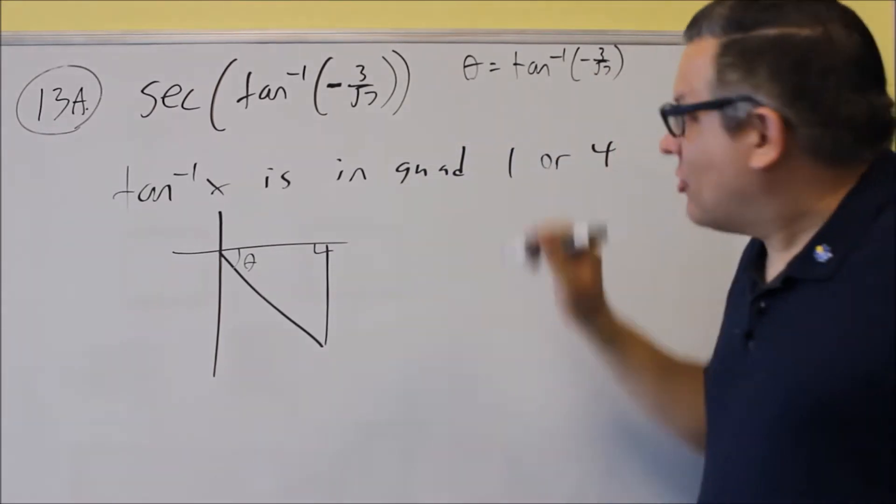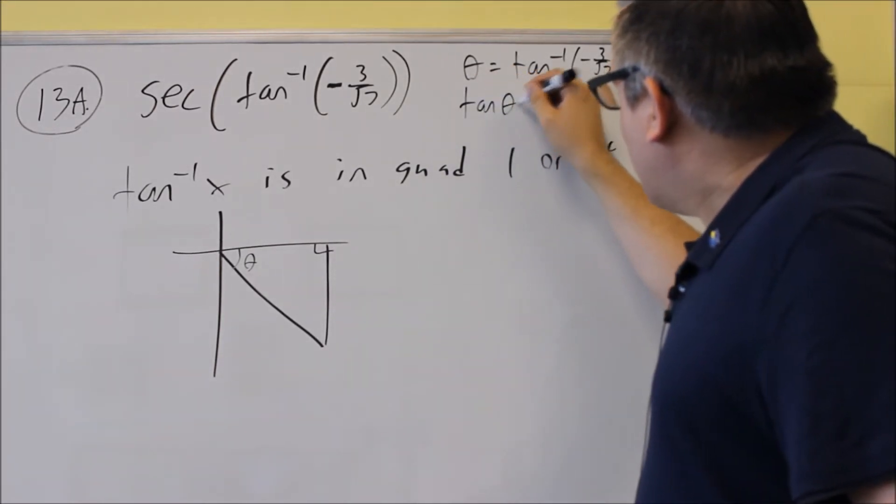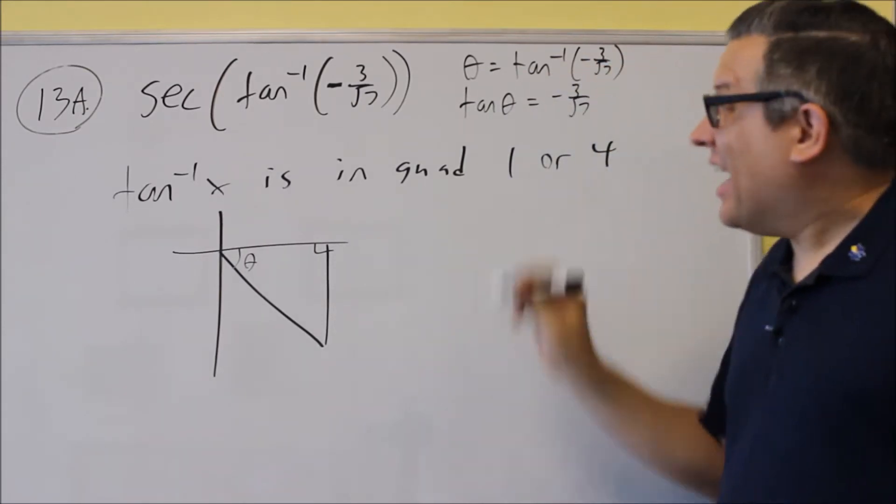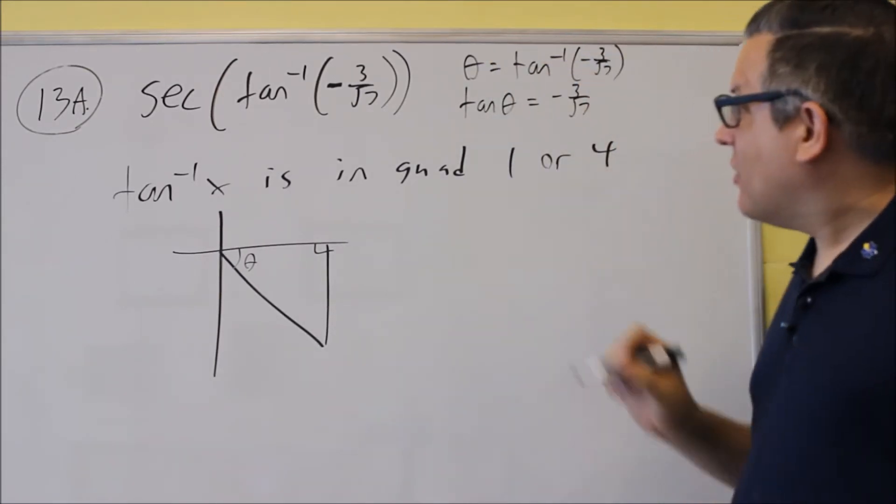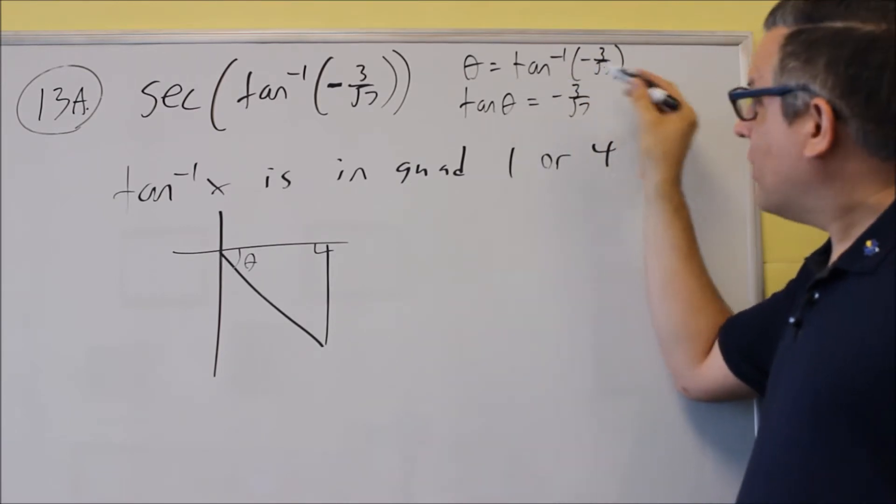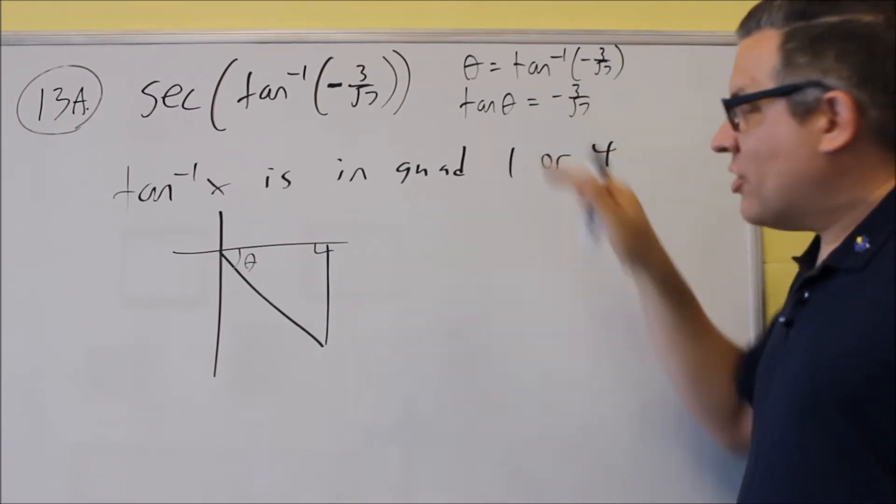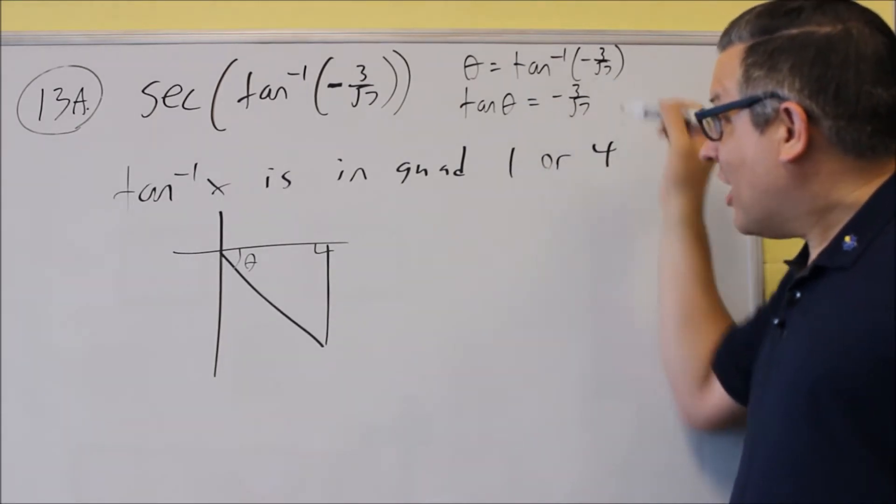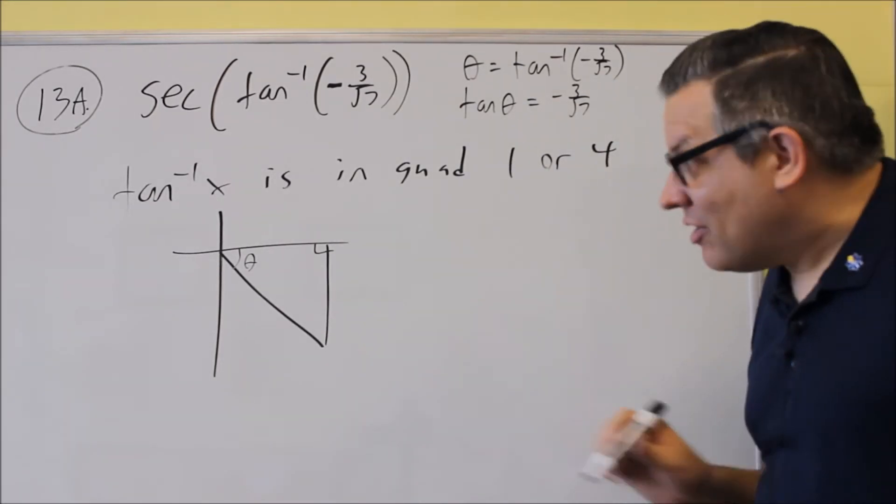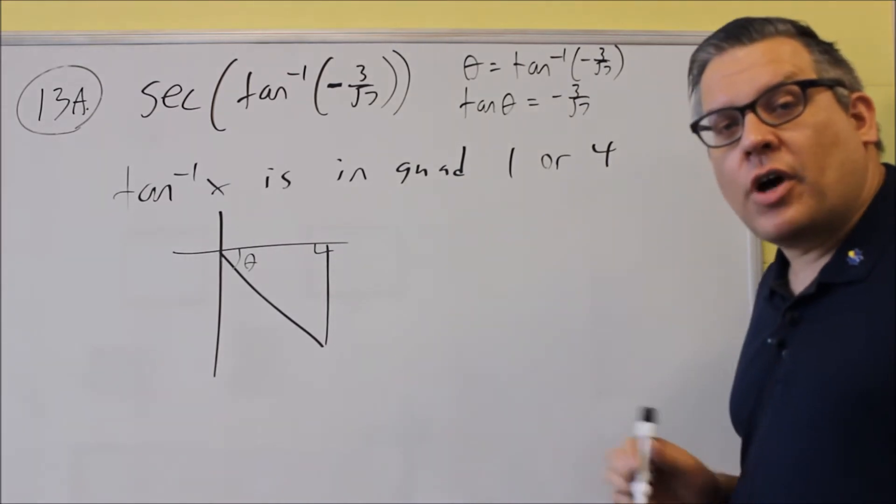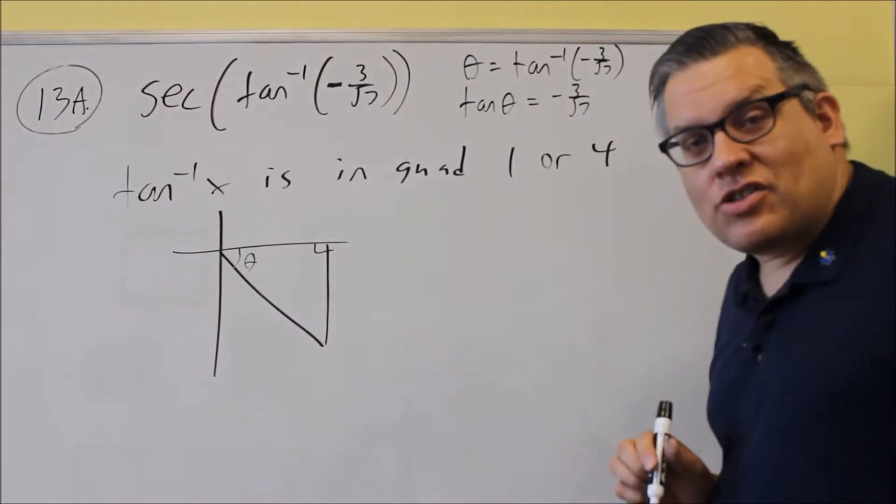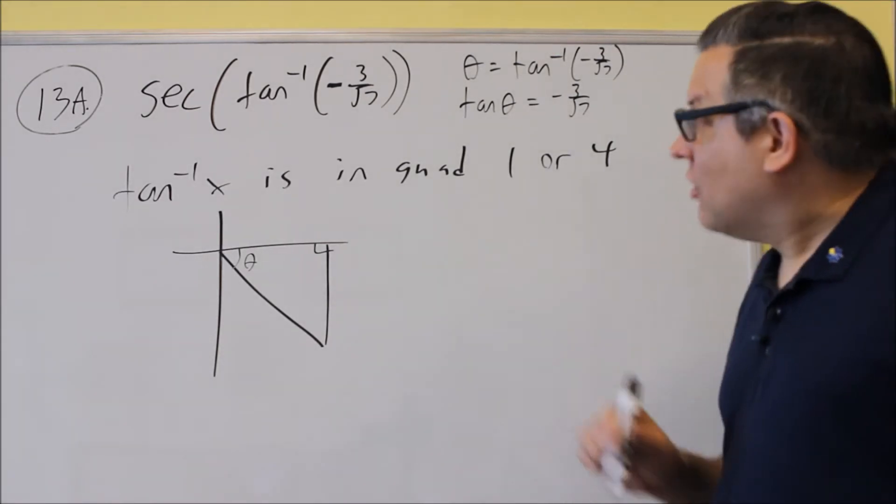If we apply a tangent to both sides, that tells us that tangent theta is equal to negative 3 over square root of 7. If you have tangent of inverse tangent, that would cancel and give you just this. Because this equivalent statement says tangent theta is negative 3 over square root of 7, that means we can label the triangle that way by using the definition for tangent. The definition for tangent is opposite over adjacent.